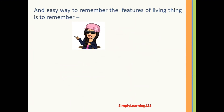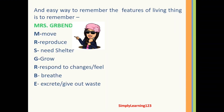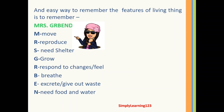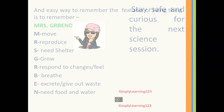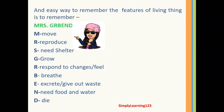Here is an easy way to remember the features of living things. If you remember MRS GRIBEN — M stands for Move, R for Reproduce, S for need Shelter, G for Grow, R for Respond to changes, I for breathe, B for Excrete or give out waste, E for need food, and N for Die — these are the nine features of living things which make them different from non-living things.